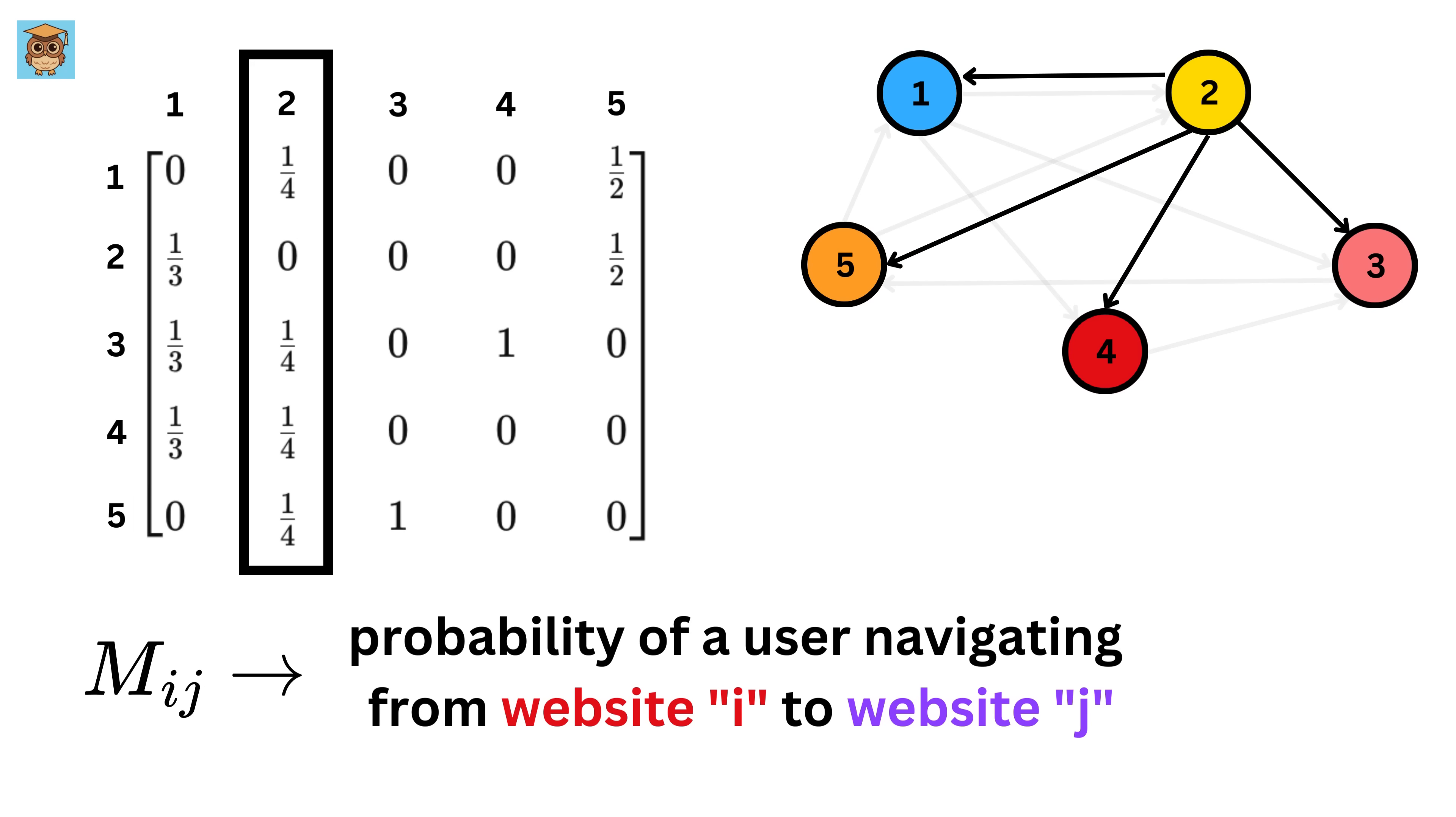Similarly, look at column 2. This will be zero because there is no link from 2 to itself, and for the rest of them we have one outgoing link from website 2 to every other website, which means a total of four outgoing links. Hence, we have a value of 1 over 4. This pattern continues for all websites.